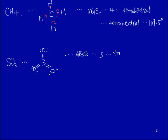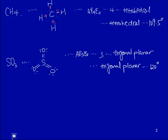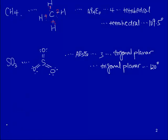Sulfur trioxide is AB3E0, the electron group geometry is trigonal planar, and the molecular geometry is also trigonal planar. The bond angle is perfectly 120°. However, we still don't know in detail how those double bonds between sulfur and oxygen are formed. This reveals a deficiency between the Lewis structure and VSEPR theory — no detail is provided on how those bonds, whether single, double, or triple, are actually formed.